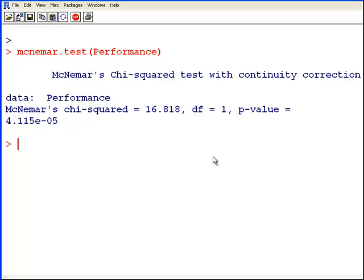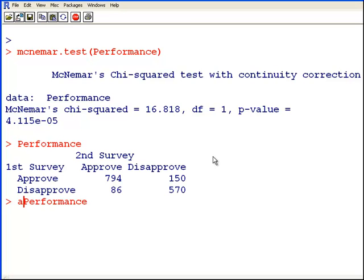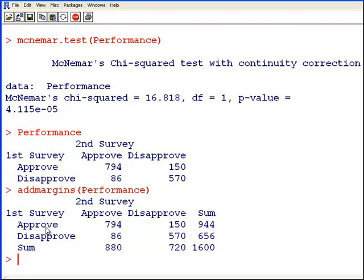Now, just remember that the null hypothesis here is the same before and after, so the approval rating before and after. Actually, let's take that out, the approval rating before and after is the same. And if we look at it again, add margins, performance. So in the first survey, he had 944 out of 1600, in the second survey, he dropped, or, well, obviously, he hasn't been a she yet, 880 out of 1600. So there's a bit of a drop there in approval ratings. So the performance, the success rate, the approval rate, is not the same between the two surveys before and after. That is the McNemar test.